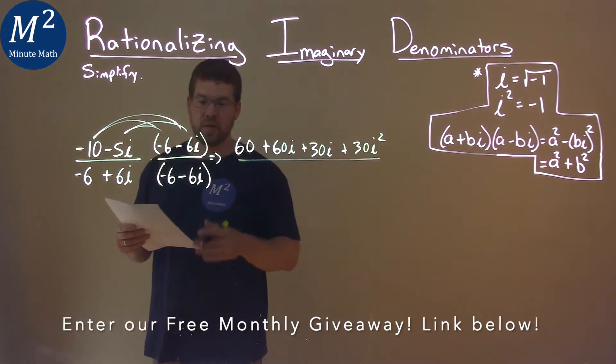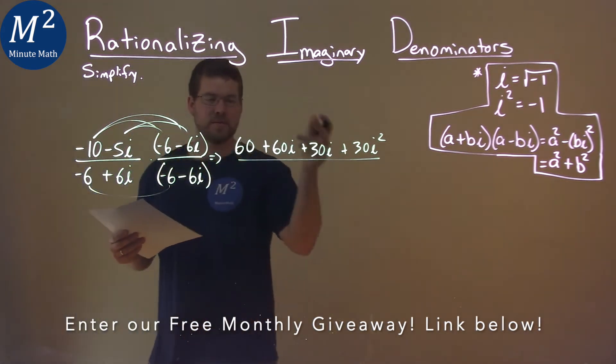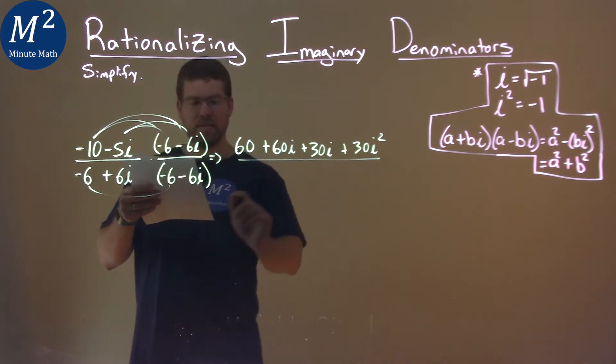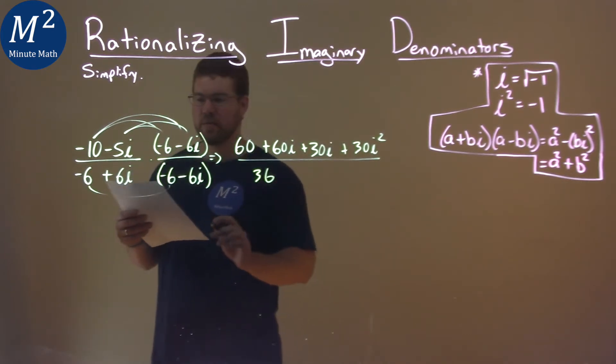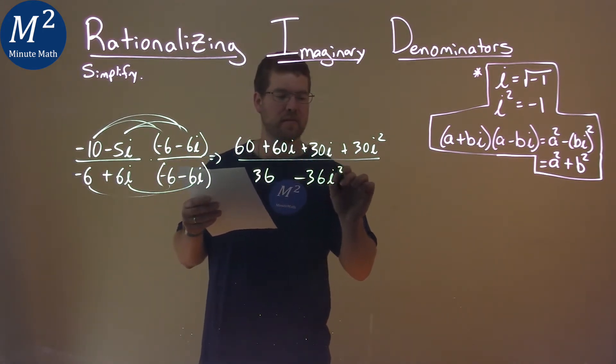Now the denominator. The point of multiplying a complex conjugate is you don't have to do all those steps. The first two numbers multiplied: negative 6 times negative 6 is positive 36. 6i times minus 6i is minus 36i squared.